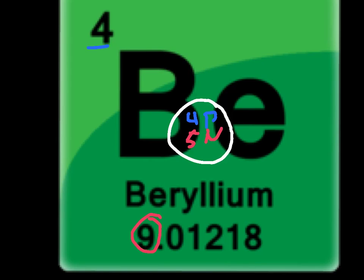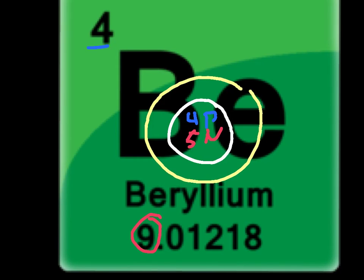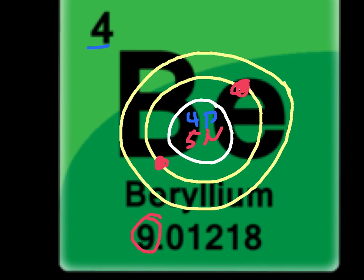We're going to keep drawing these electron rings, starting with the first one. This first ring is always going to have just two electrons. Beryllium is going to have four electrons because it has four protons to balance it, so we've already drawn our first two right there. That means we're going to draw another ring to fit the other two. Now, with these two being left over, because this ring is not full with eight electrons — it only has two — those are called valence electrons. So beryllium is going to have two valence electrons.